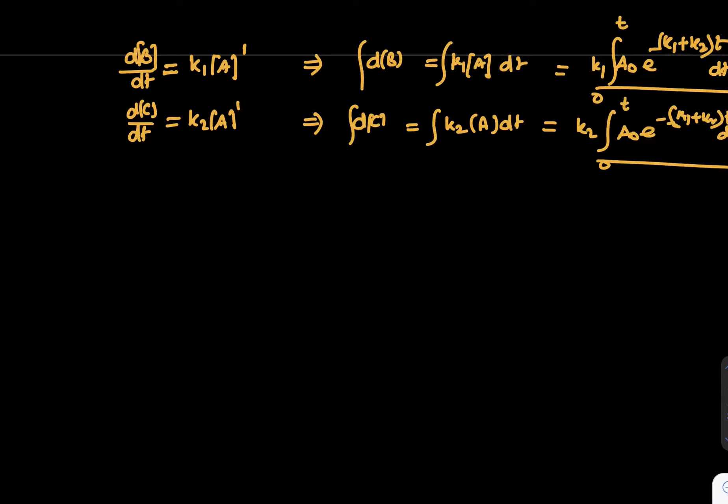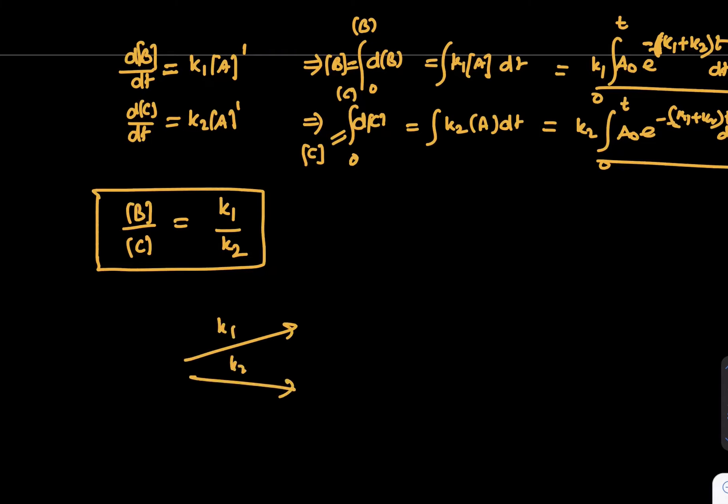And this is k2 being a constant will come out, A0 e power minus k1 plus k2 times t dt. So if you understood the whole thing, we can say this integration will be same value. The limits are also same 0 to t. Whatever be the value of B, you can get it from here. But what is this answer going to give us? Concentration of B. What is this answer going to give us? Concentration of C. So what is ratio of B and C? If you take ratio of B and C, it would become k1 divided by k2. Everything else gets cancelled out. So one more learning here. Whatever be the values of k1, k2, in the same proportion, we get the concentrations of B and C, if A is given.